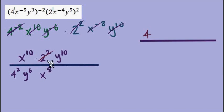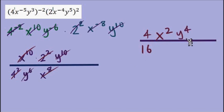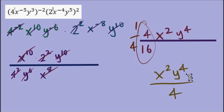Next, I open another blank fraction and evaluate the numbers. 2 to the positive 2 in the numerator gives 4; 4 squared in the denominator is 16. For the variables: x to the 10th over x to the 8th leaves x to the power of 2 in the numerator. y to the 10th over y to the 6th is a difference of 4, with more y's in the numerator, so y to the 4th goes in the numerator. Simplifying 4 sixteenths gives 1 fourth, so the final answer is x squared y to the 4th over 4.